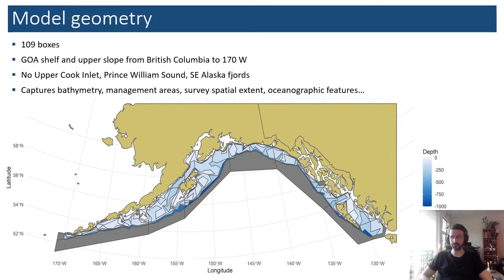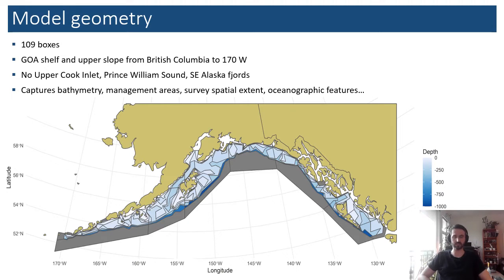As an overview, it's a pretty large model because it covers a large area. We've got 109 boxes including dynamic and boundary boxes. It stretches from British Columbia at the eastern tip, following the arc of the Gulf of Alaska all the way to 170°W on the Aleutian Islands. It is a shelf model, so we only model explicitly down to 1000 meters depth, and we don't push into big embayments like Prince William Sound and Cook Inlet. The geometry has some complex box shapes resulting from the complex bathymetry, with constraints from steep bathymetric gradients and management areas spanning two countries — Canada and the United States.